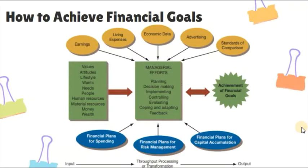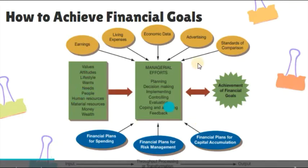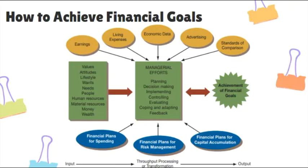Based on this flowchart, we have the inputs, the processing, and the goal output. To achieve our financial goals, we need to first assess ourselves — our values, attitudes, lifestyles, what we want, what we cannot live without, and who can help us. This includes human resources, material resources such as money for a small business, and the assets we have.